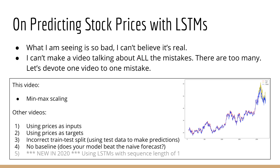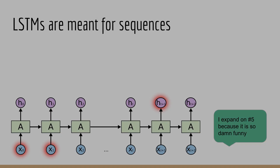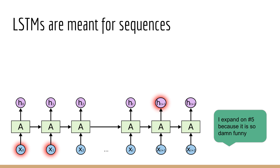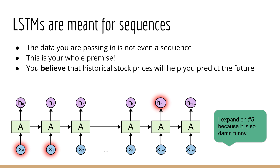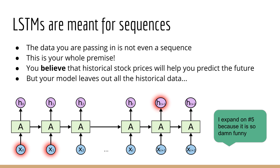Number five — this one is one of the most ridiculous mistakes I've seen in a while. Tons of people are building LSTMs, which are deep neural networks meant to predict sequences, and yet all of these scripts are using a sequence length of one, which means they are not using sequences at all. You have a bunch of people who have zero clue what they are doing using LSTMs, which are meant for sequences, and the data they are passing in is not even a sequence. Your premise is that you think past stock prices will help you predict future stock prices — that the LSTM will pick up some pattern in the sequence of historical data — and yet you are not even passing in that data. In other words, this is a completely idiotic approach.